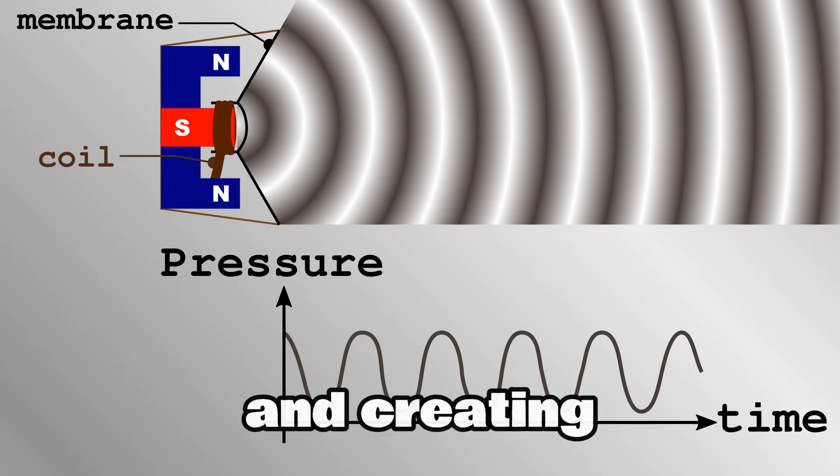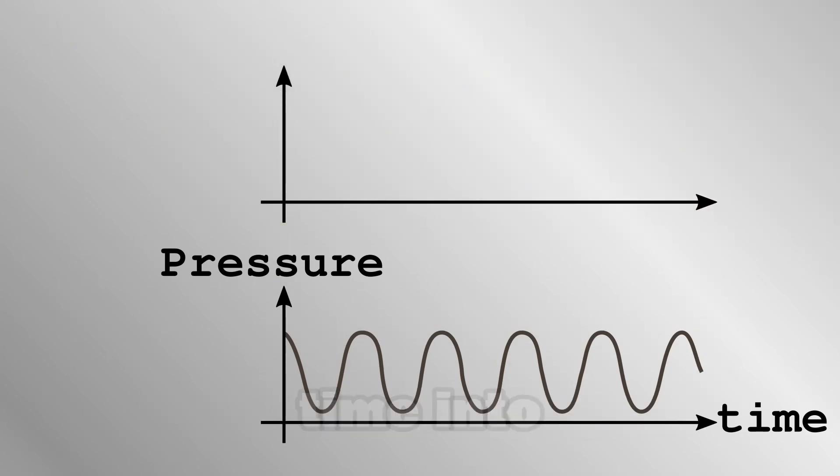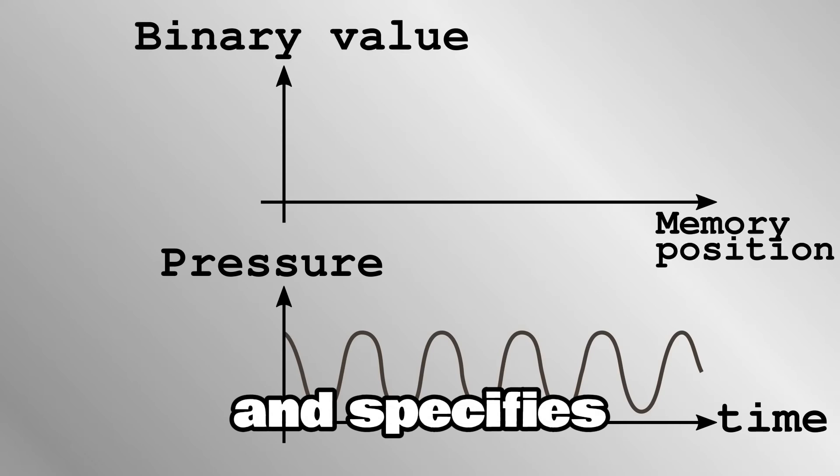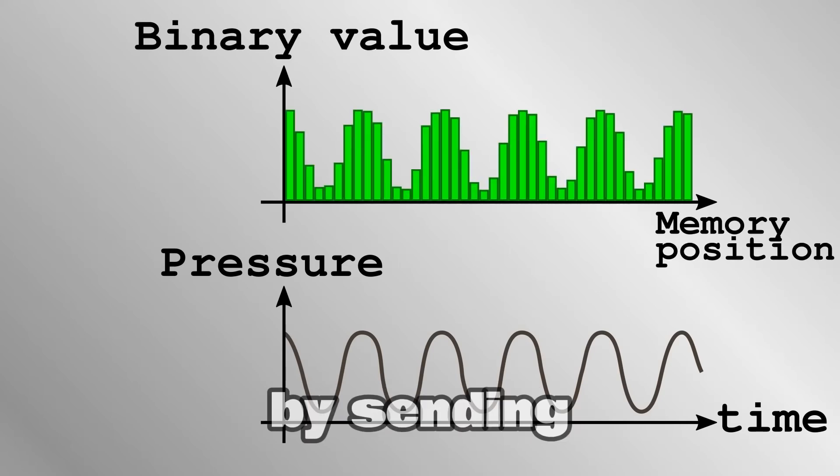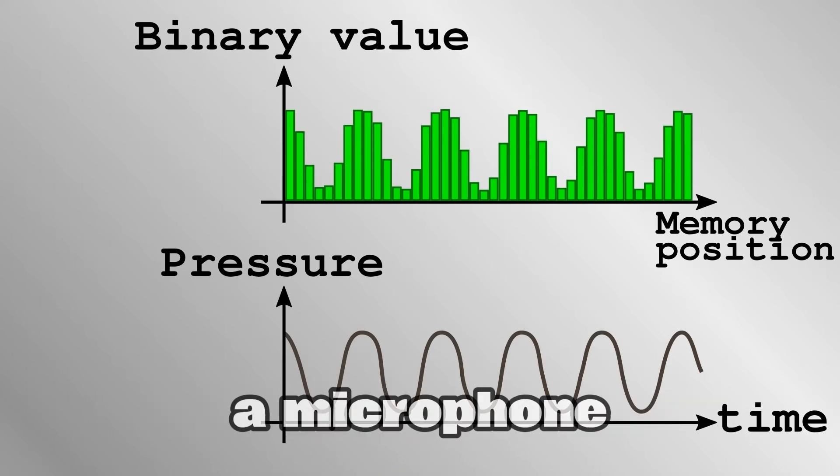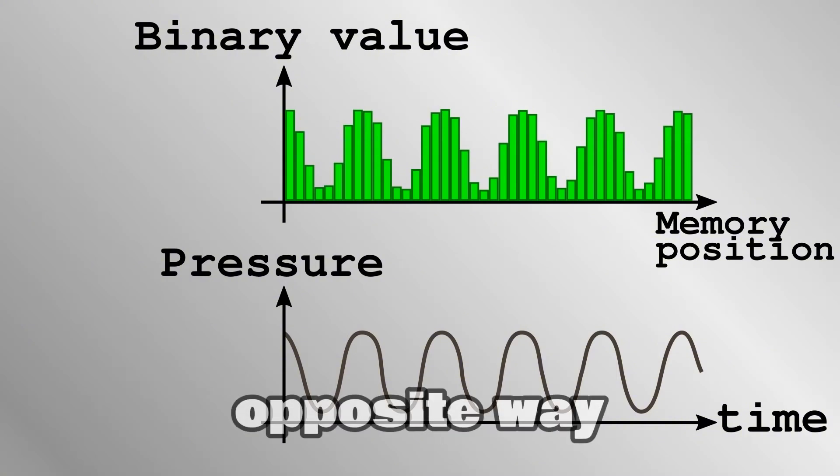The computer breaks up time into short steps and specifies the current at every step in time by sending a binary number to a sound card. Electronics turn the digital binary values into the appropriate current. A microphone works in exactly the opposite way.